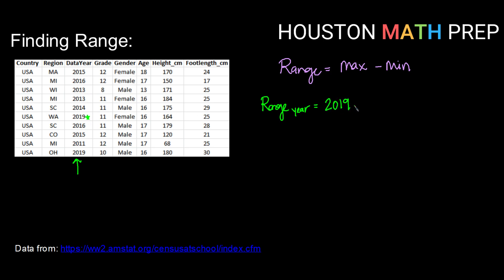So 2019 minus the minimum year — scanning through, that appears to be 2011. So our range would be 2019 minus 2011, which would be 8 years. This data spans a range of 8 years.